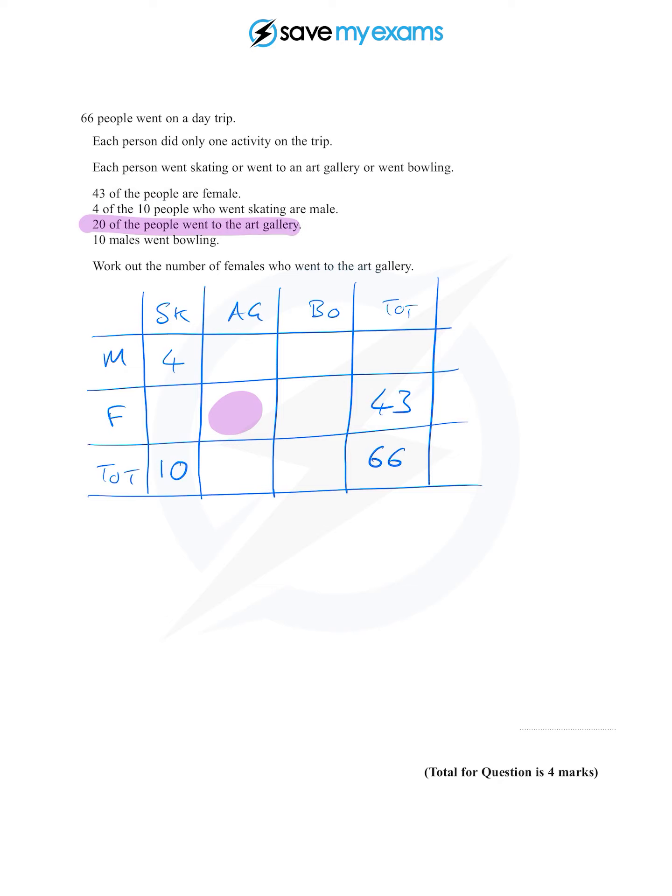The next thing is that 20 people went to the art gallery, so the total art gallery visitors is 20. And finally we are given the information that 10 males went bowling, so there's 10 in there.